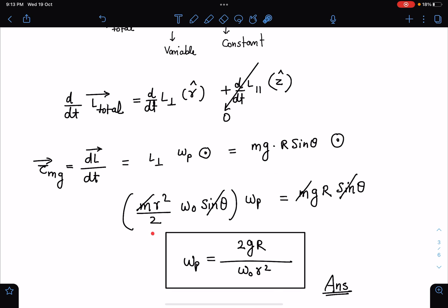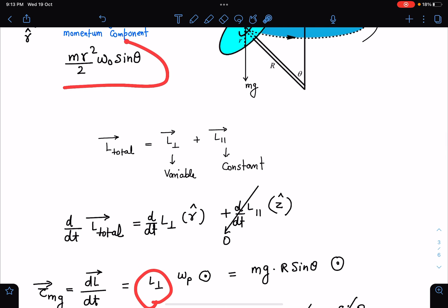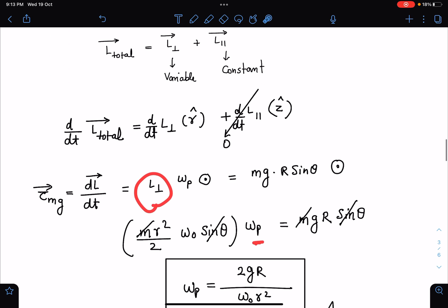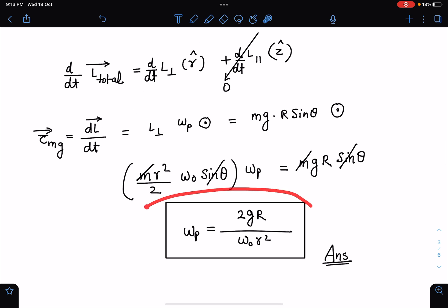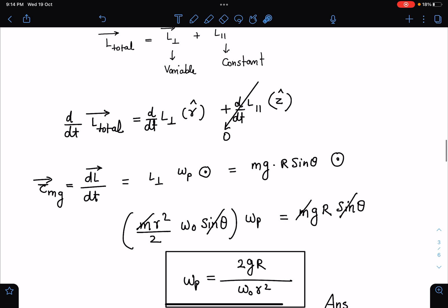Let's equate these two: m*r^2/2 * omega_0 * sin(theta) * omega_p equals mg*R*sin(theta). If you simplify this, you will get omega_p equals 2g*R/(omega_0*r^2), and this is the answer for this problem.